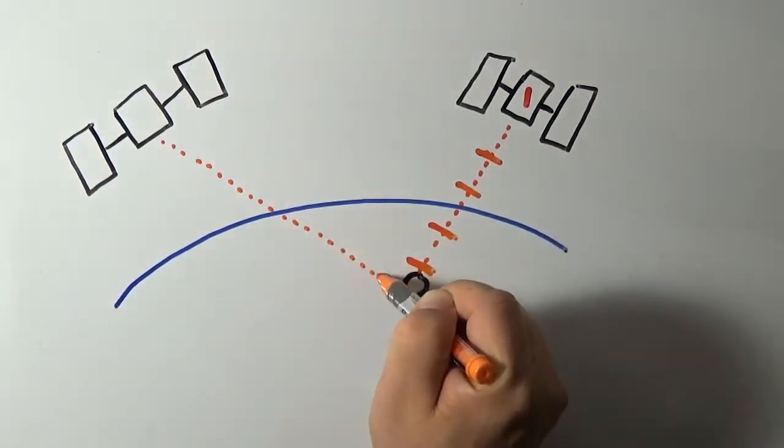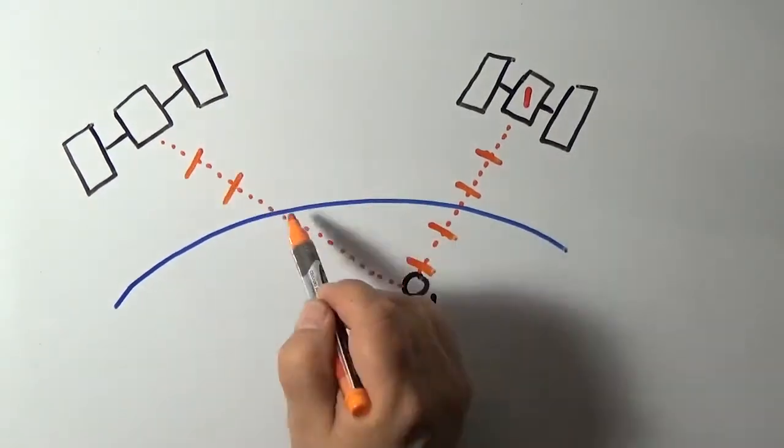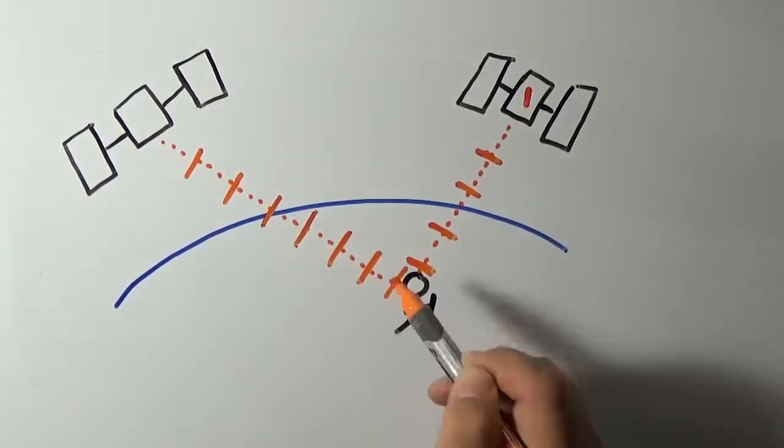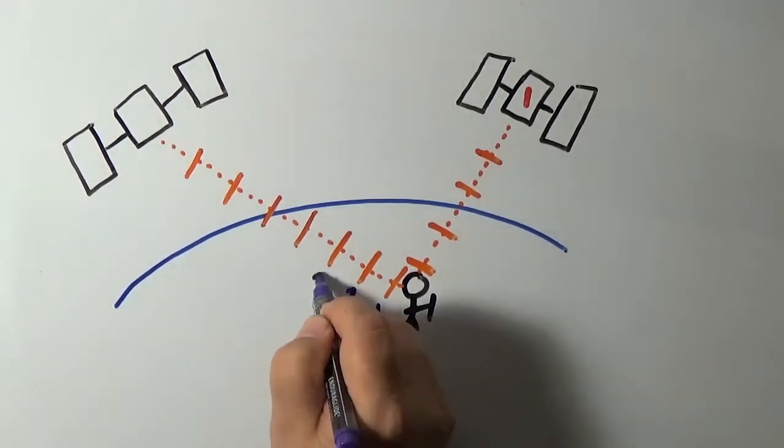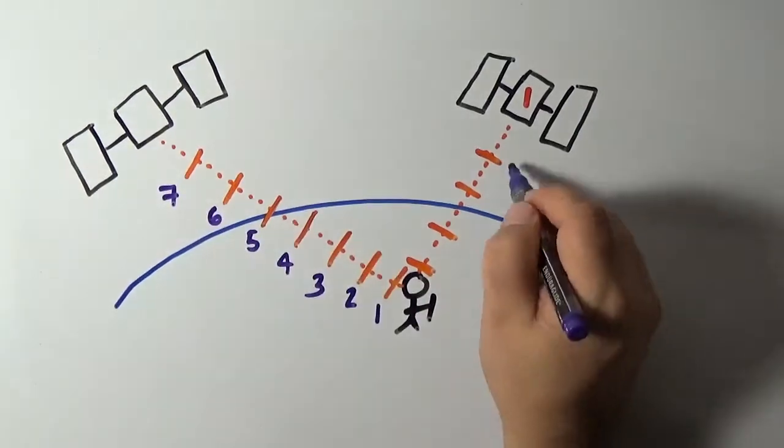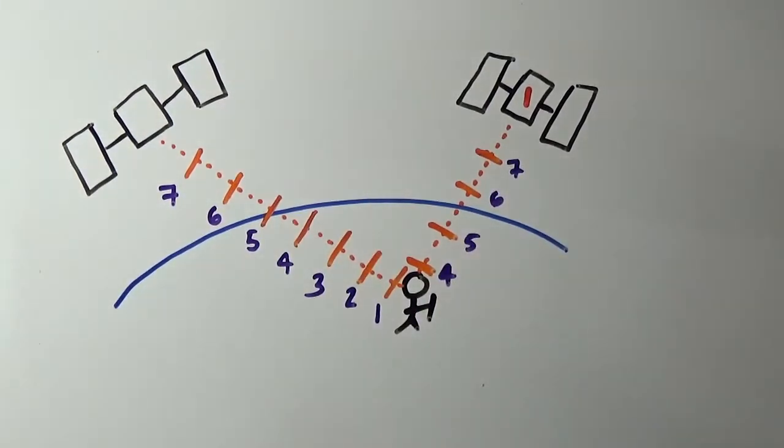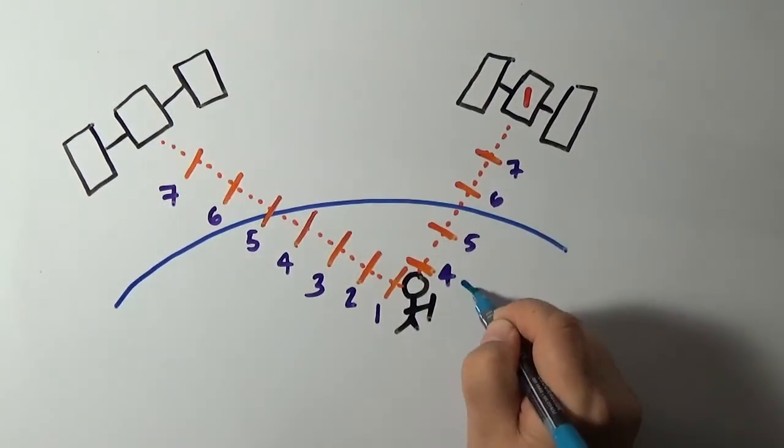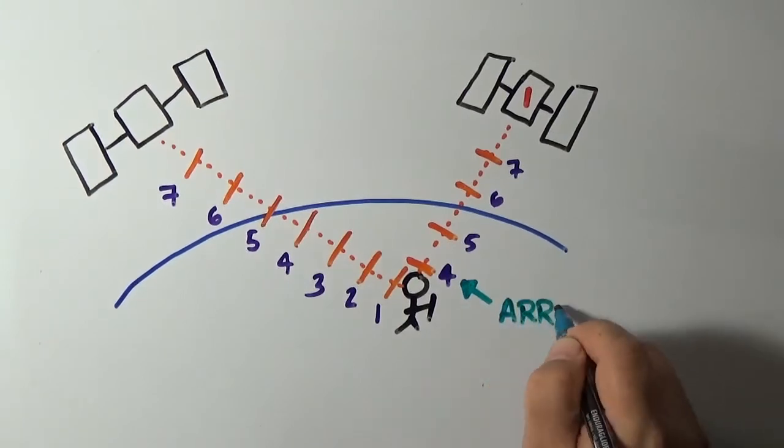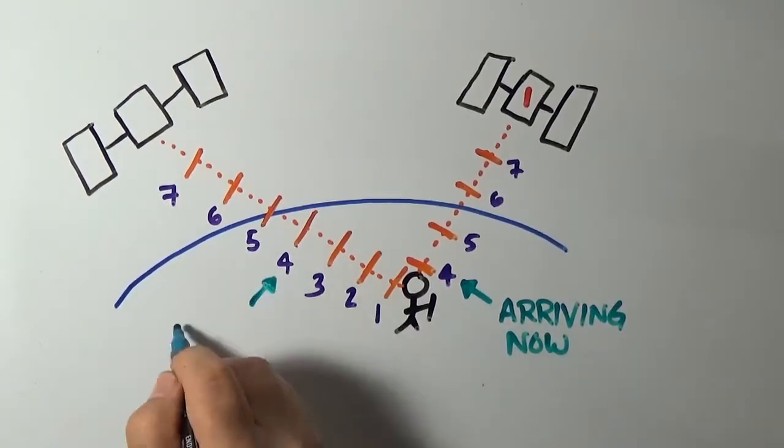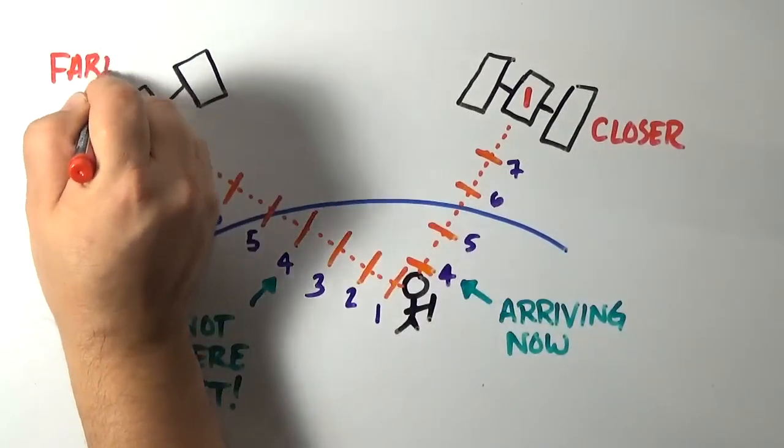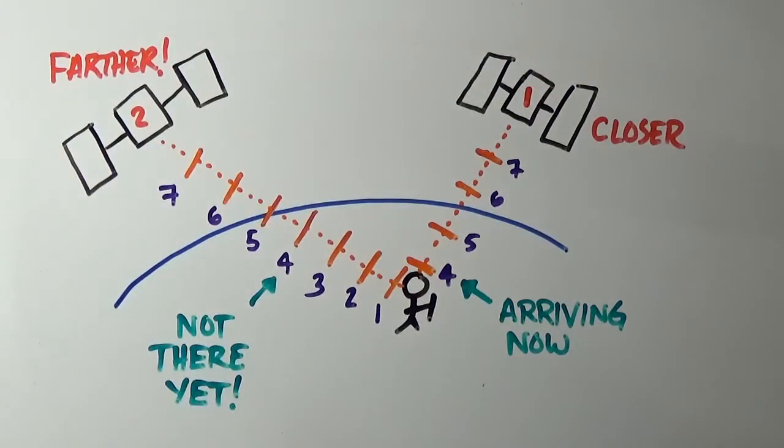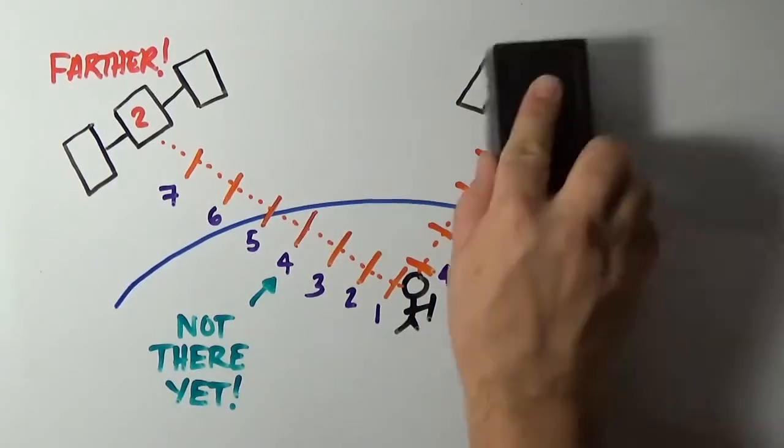What signal are the satellites sending? They're all broadcasting time signals at exactly the same moment. Your phone receives those times and compares them to figure out how far you are from each satellite. Your phone reads the same time from two satellites at different moments. Signals from a close satellite arrive sooner than signals from a farther satellite. This allows you to triangulate your position.